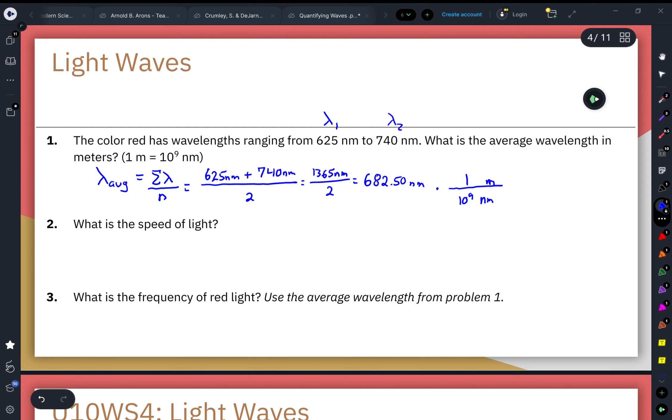Every one meter is equal to 10 to the ninth power of nanometers. So if we were to plug this into a calculator, it would give us 682.50 nanometers divided by our 10 to the ninth power.